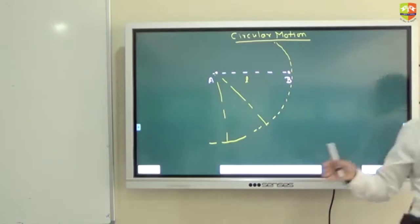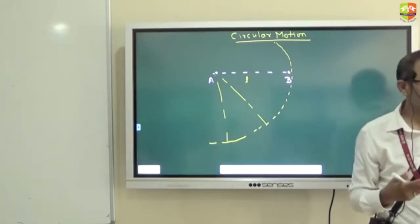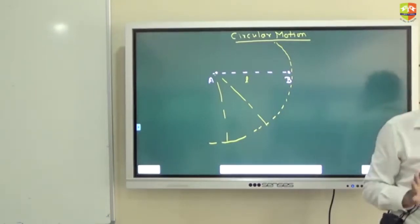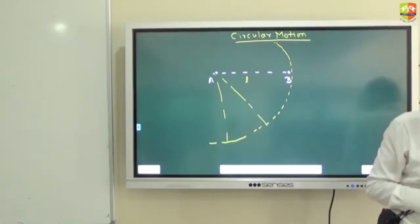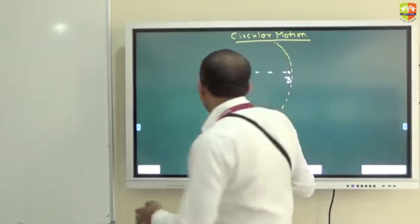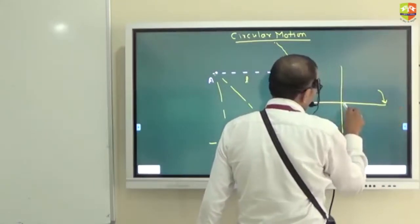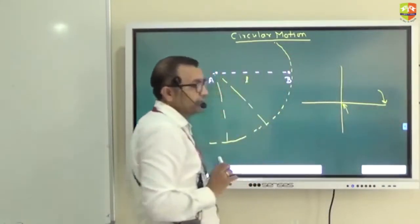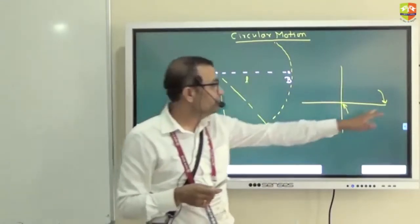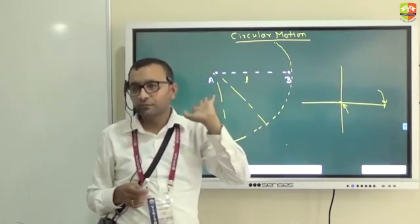When I am moving, my distance from the fan is increasing. So with respect to me, the fan cannot move in a circle. But when you look at the fan, the tip of the fan and the center - the distance between these two points is fixed. And if this point has to move relative to that point, it has only one option: circle.